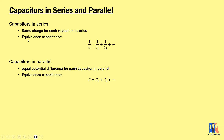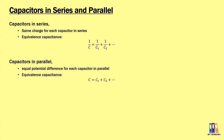The equivalent capacitance in series is calculated the same way as equivalent resistance in parallel: 1/C = 1/C₁ + 1/C₂ + .... And for capacitors in parallel, it is the same as equivalent resistance in series: C = C₁ + C₂ + .... Let's look at some examples.